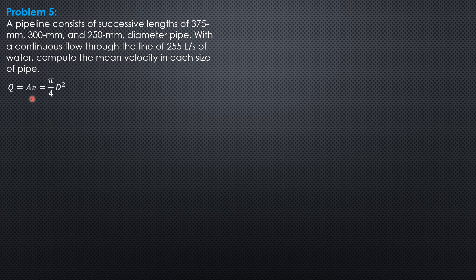Since discharge equals area times mean velocity, and the pipe is circular, the area is pi over 4 times diameter squared. The formula for velocity is therefore 4Q over pi times diameter squared.